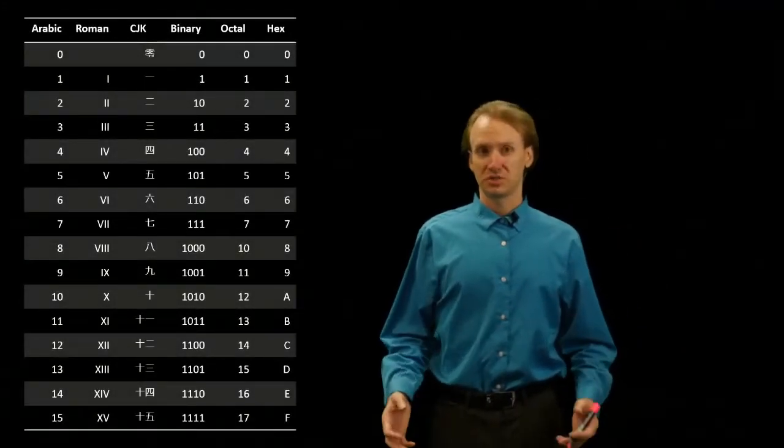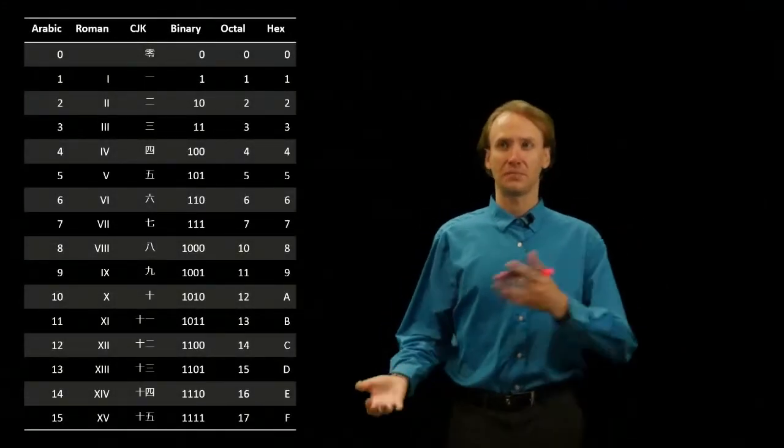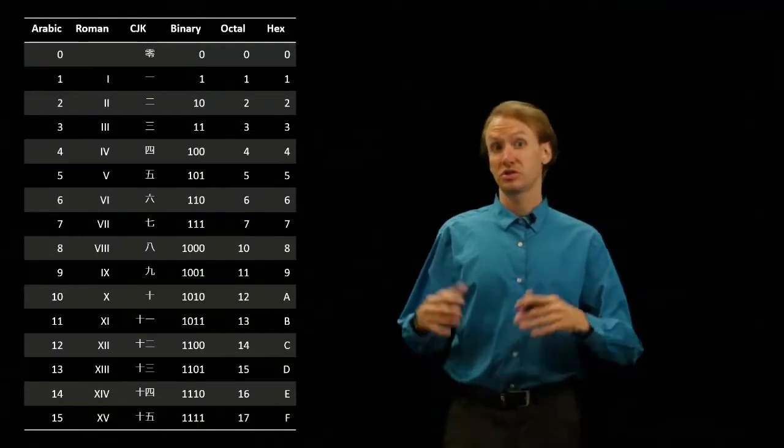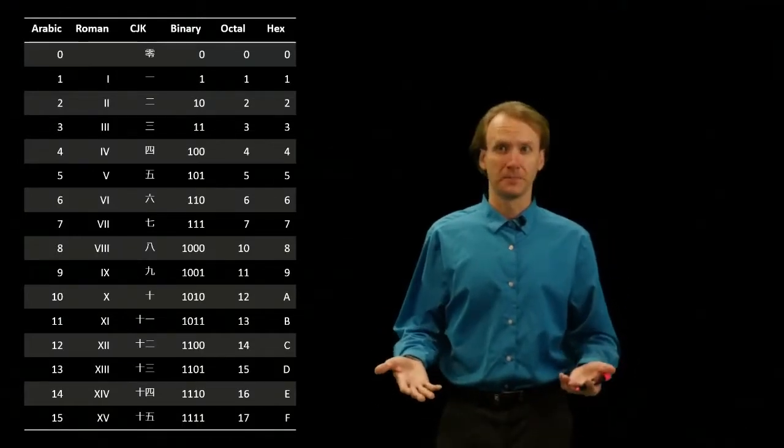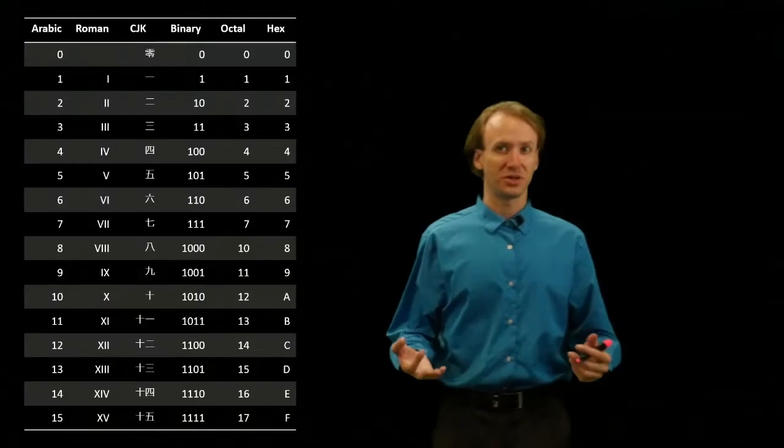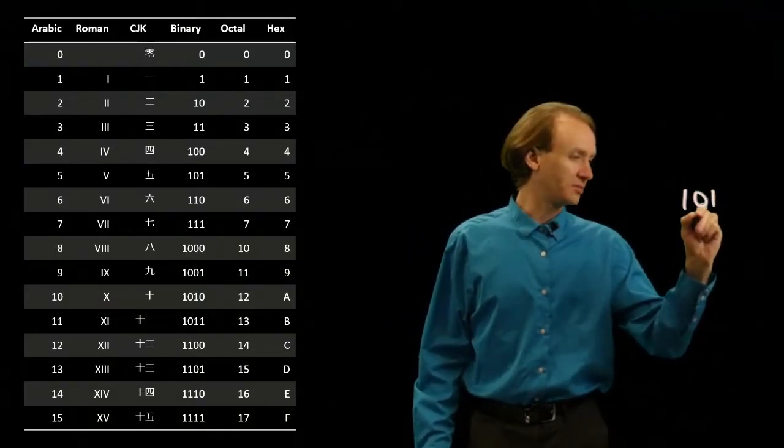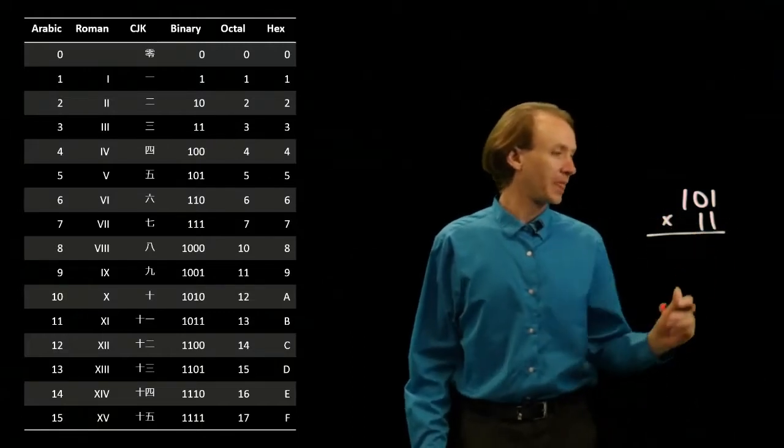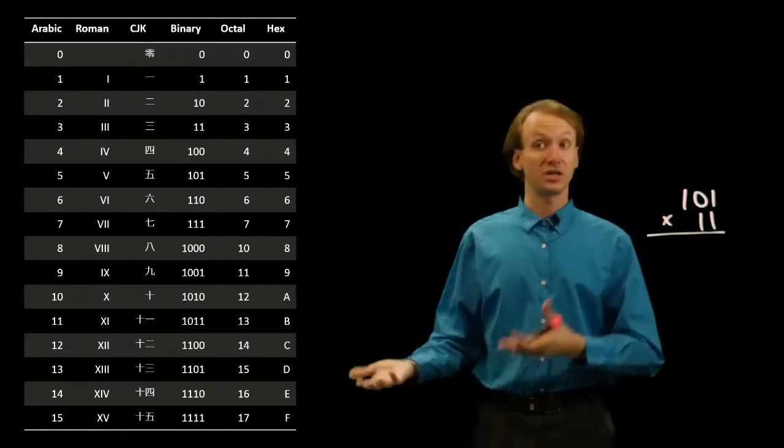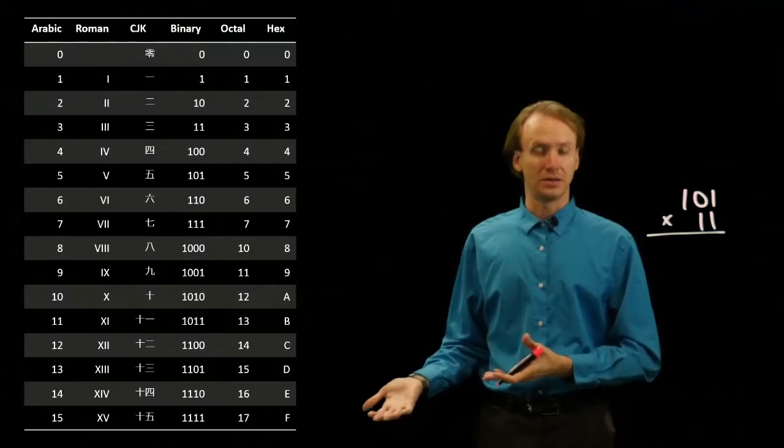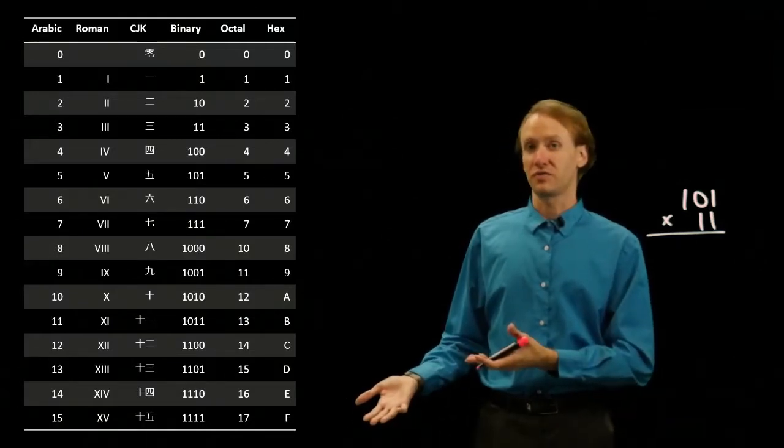For this example I'm going to start with some small numbers that appear in our number line and we're just going to multiply them in binary. So if I start with something really simple like 5 times 3, I should get 15 out and you can see what the binary value is for 15 there.